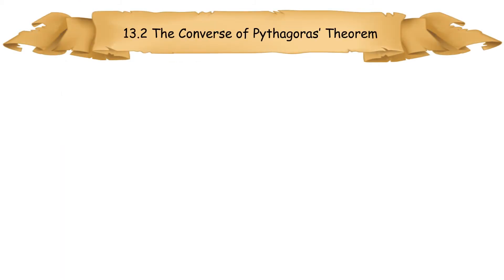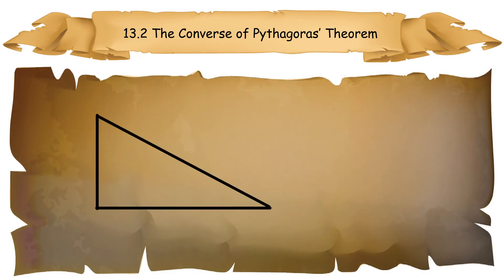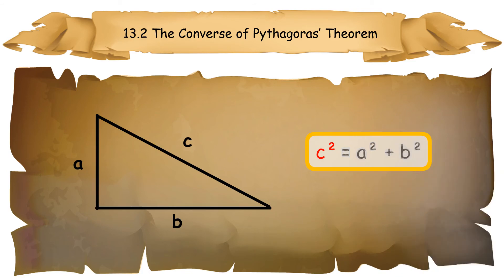13.2 The Converse of Pythagoras Theorem. The Converse of Pythagoras Theorem states that whenever the sum of the squares of two sides equals the square of the third side of the triangle, the triangle is a right-angled triangle. If c² = a² + b², then the angle opposite to side c is a right angle.